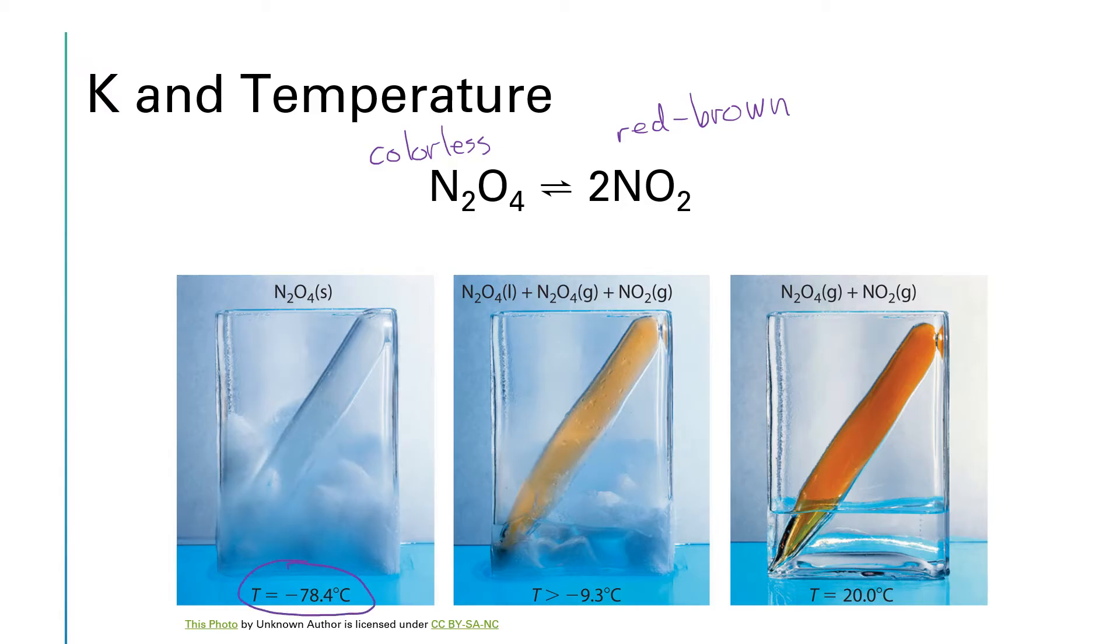And the ampoule that contains the N2O4 is completely colorless. If we let this warm up and we get to a temperature of about negative 9.3 degrees C or a little bit bigger, we start to see the formation of this red-brown color as equilibrium is being established. And we have a mixture of N2O4 and NO2. The N2O4 is colorless and the NO2 has that red-brown color to it. And then as the temperature warms up and this equilibrium is established, we clearly have more of the NO2.